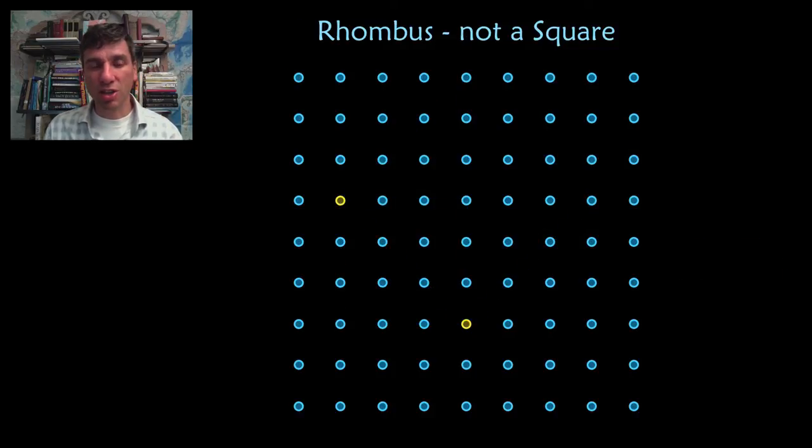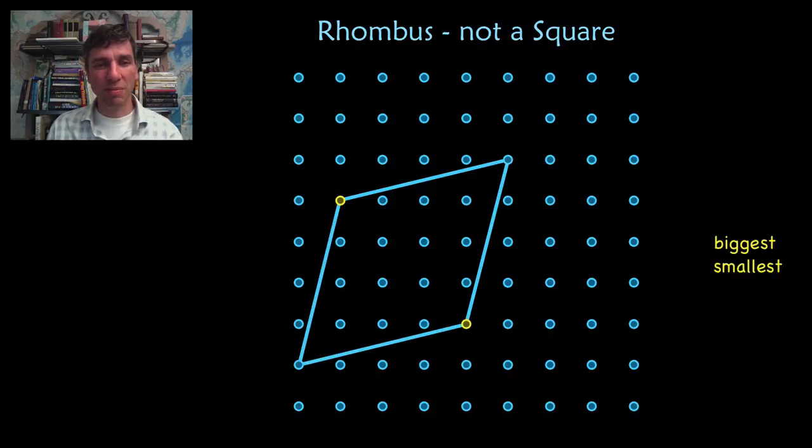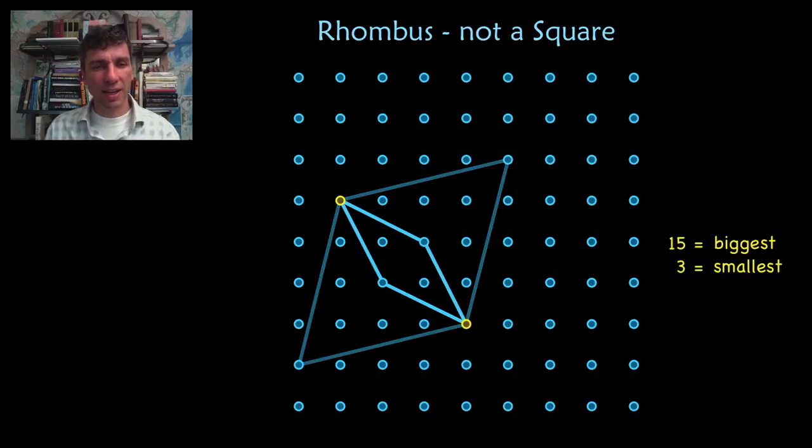A rhombus that is not a square. Think about it. Try to solve it. Here's the answer. That's the biggest one that is not a square. Is that right? Actually, I think I've found - oh maybe that is the biggest. I think that is correct. And here's the smallest one.